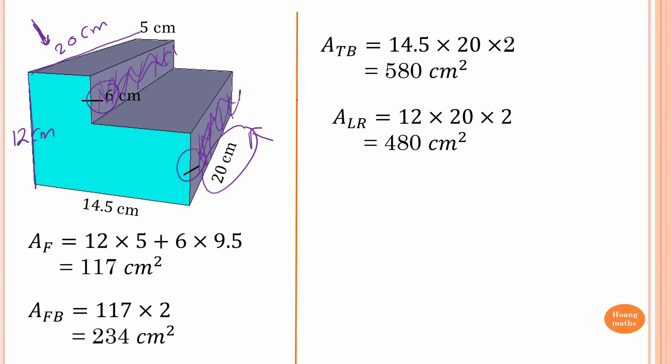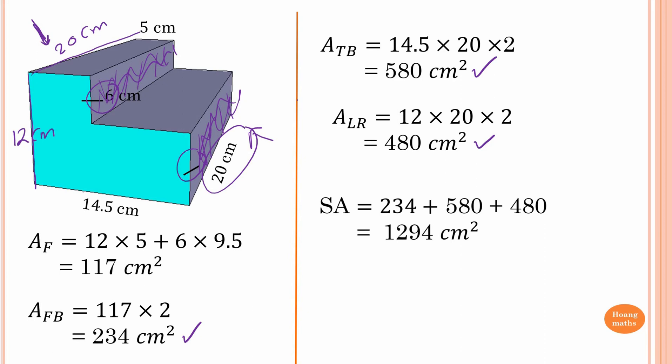Now we just add all the areas together — the front and back, the top and base, and both sides. So that is 234 plus 580 plus 480, which gives a total surface area of 1294 square centimeters.